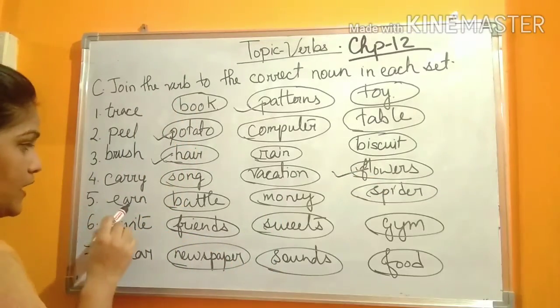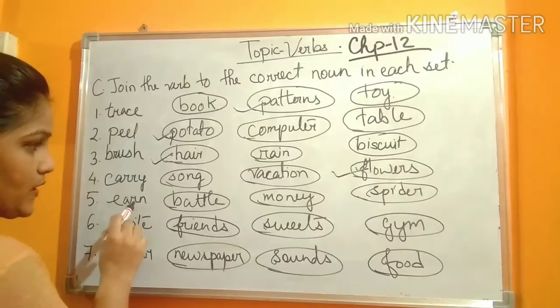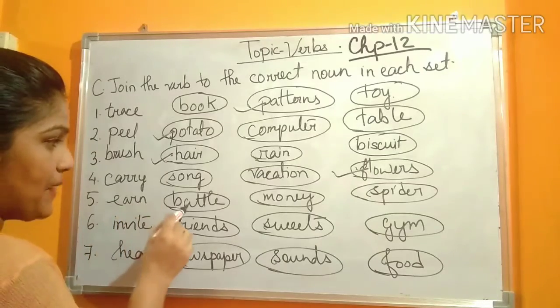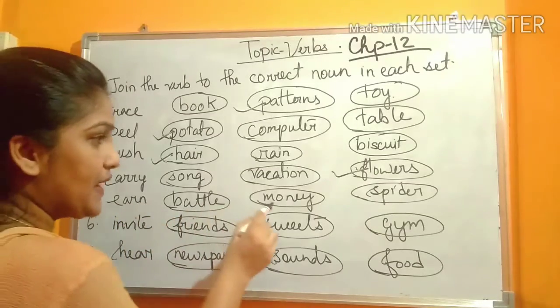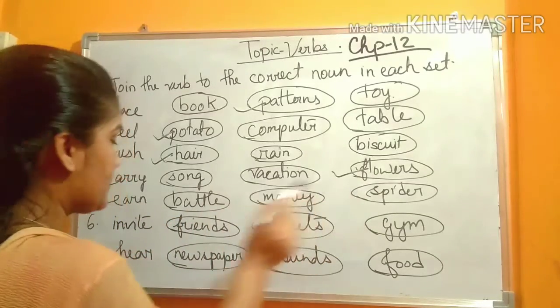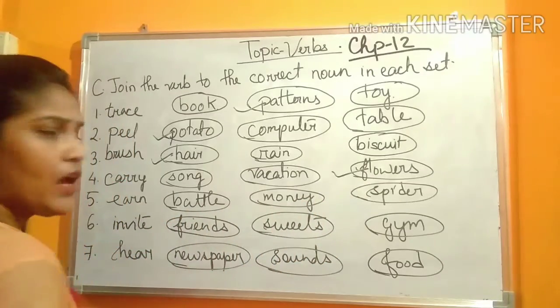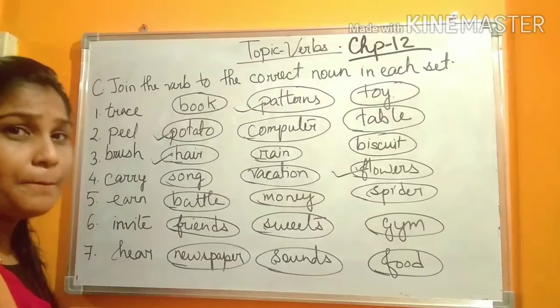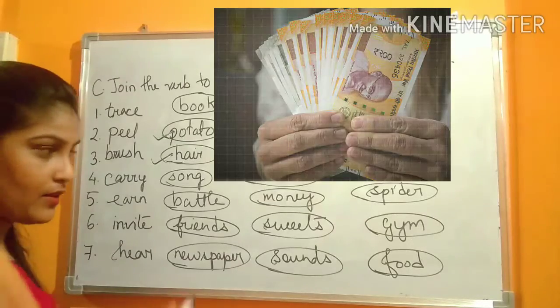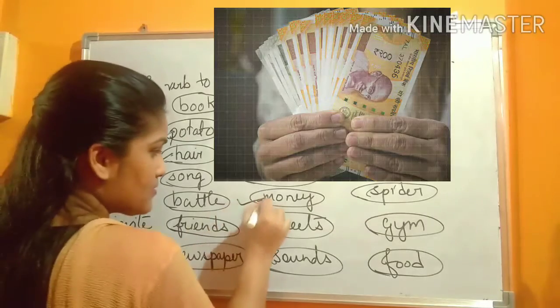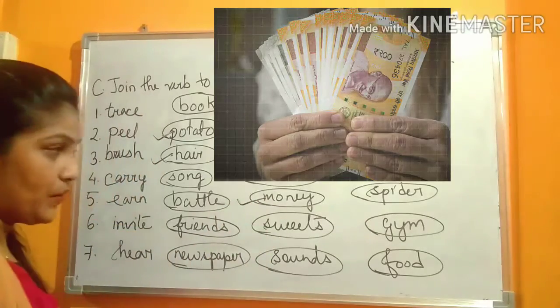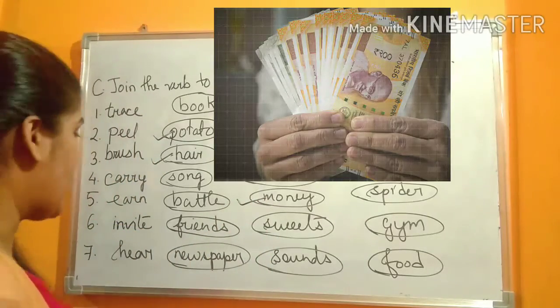Number five: Earn. Earn what? Battle, money, or spider? Which one? You will earn money. So this one will be the correct one.